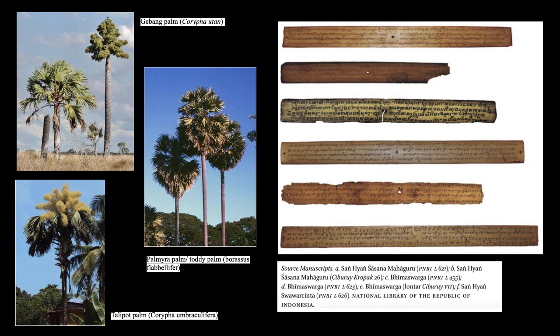Palm leaf manuscripts older than the 14th century are quite rare. The oldest extant types survive only because certain climatic conditions allowed for their conservation — conditions that would not have existed in tropical Southeast Asia. Rather, the oldest extant palm leaf manuscript fragments survive in an area like Turfan in Central Asia, dating back to the second century common era.